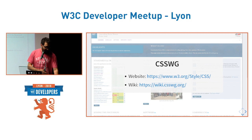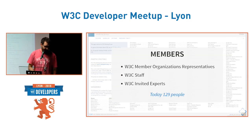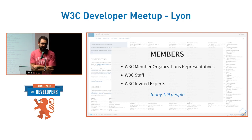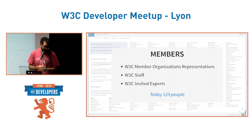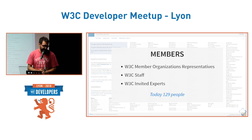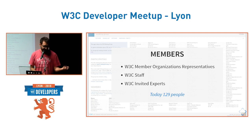There are roughly three types of members: W3C company members representing browser vendors or other companies using the web platform that are interested in CSS; W3C staff members; and a few people who are W3C invited experts — like Rachel, for example — who are there because they have a lot to contribute, even if they are not part of one of those W3C companies.